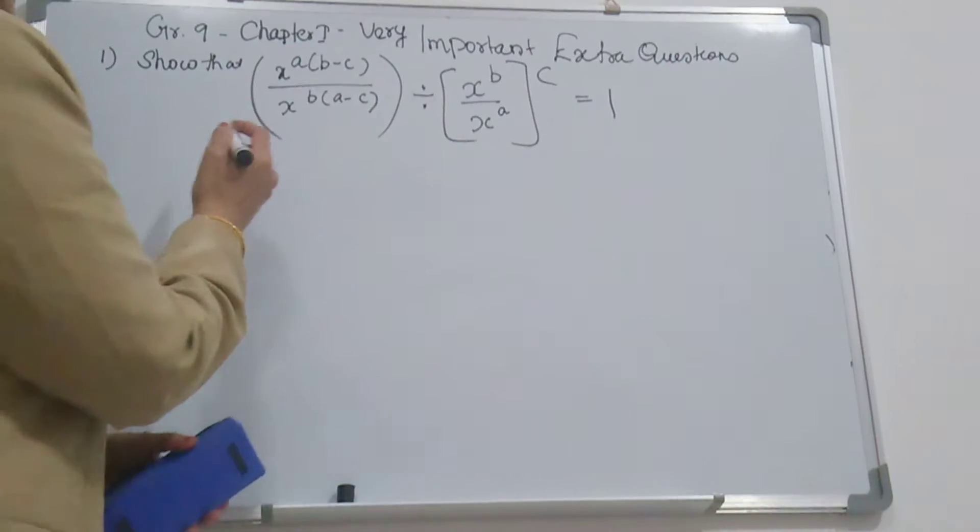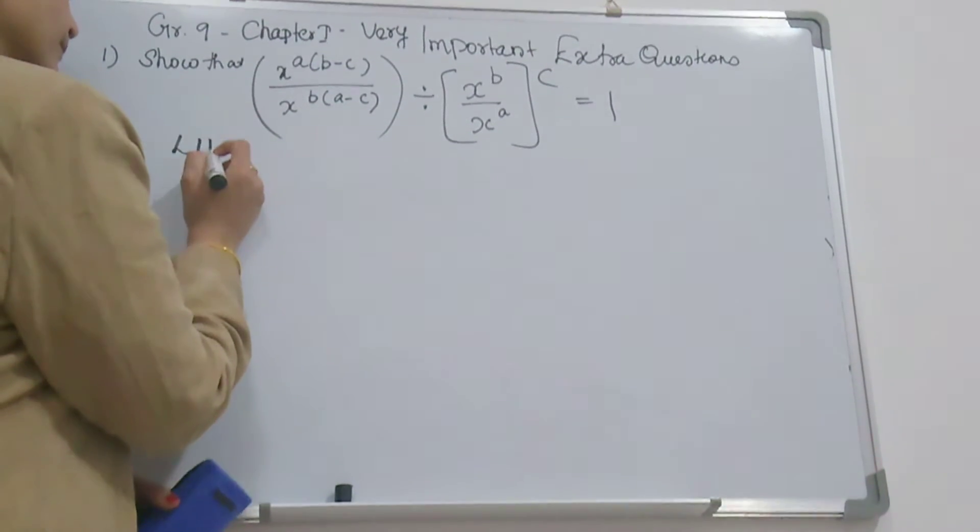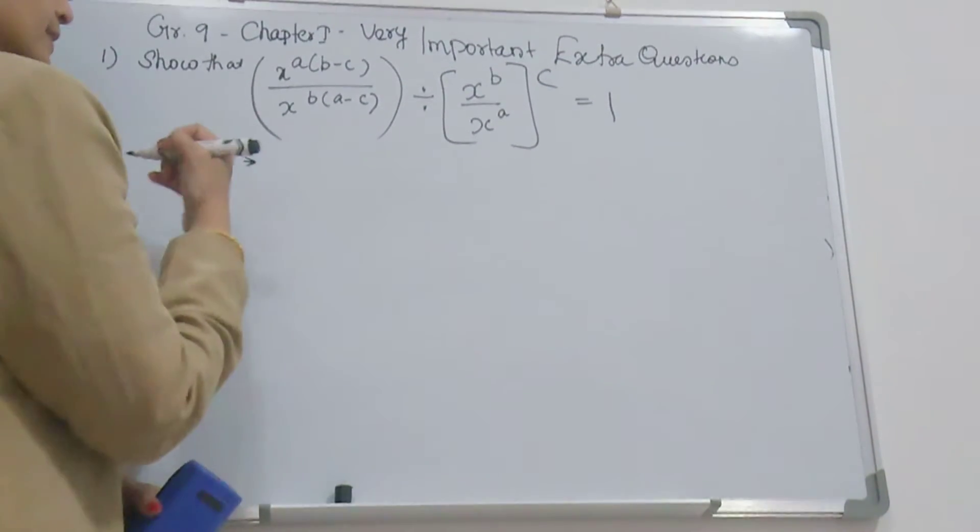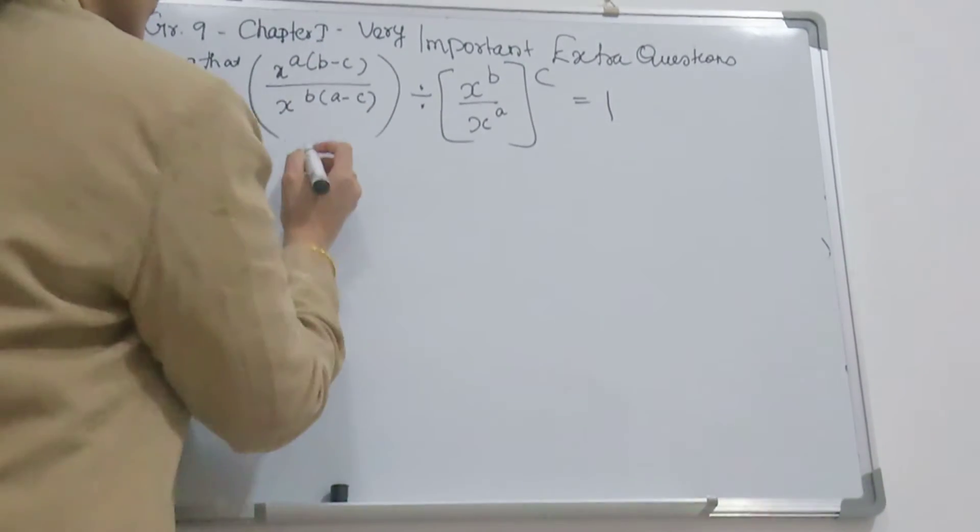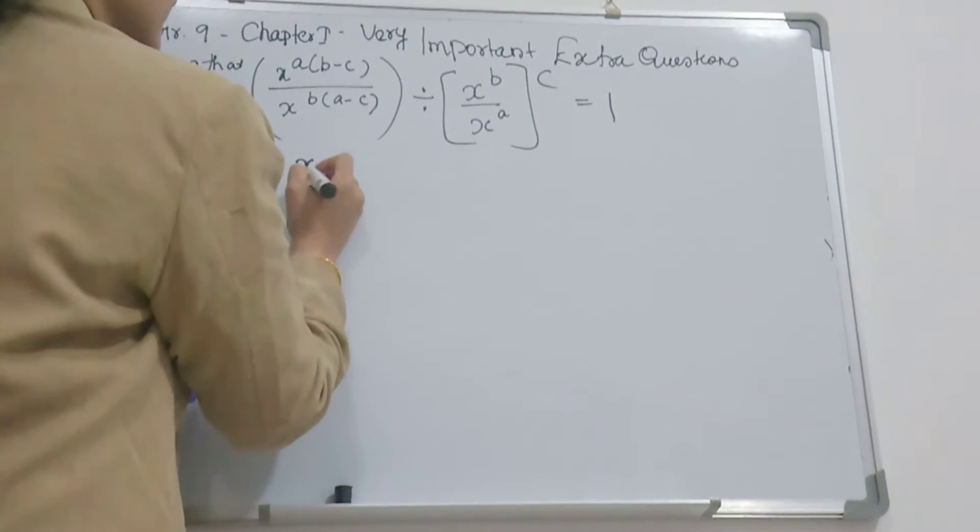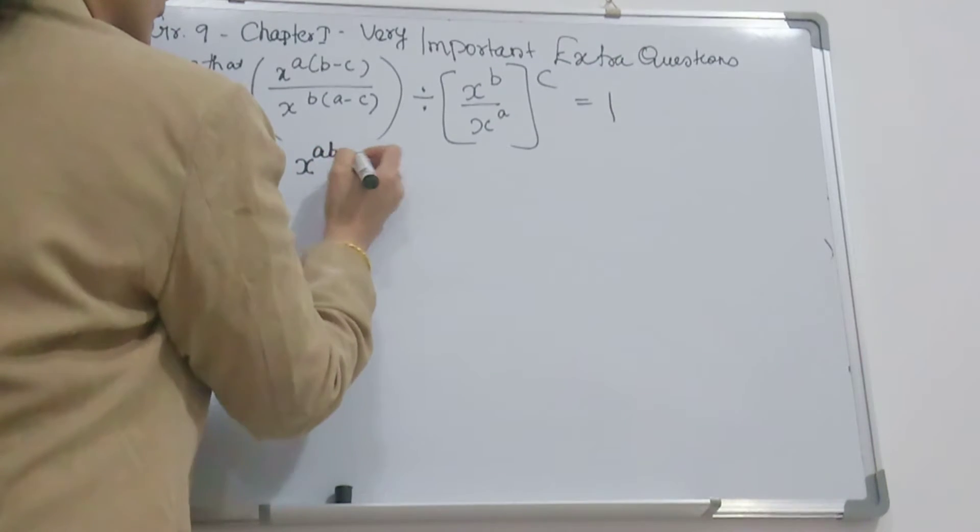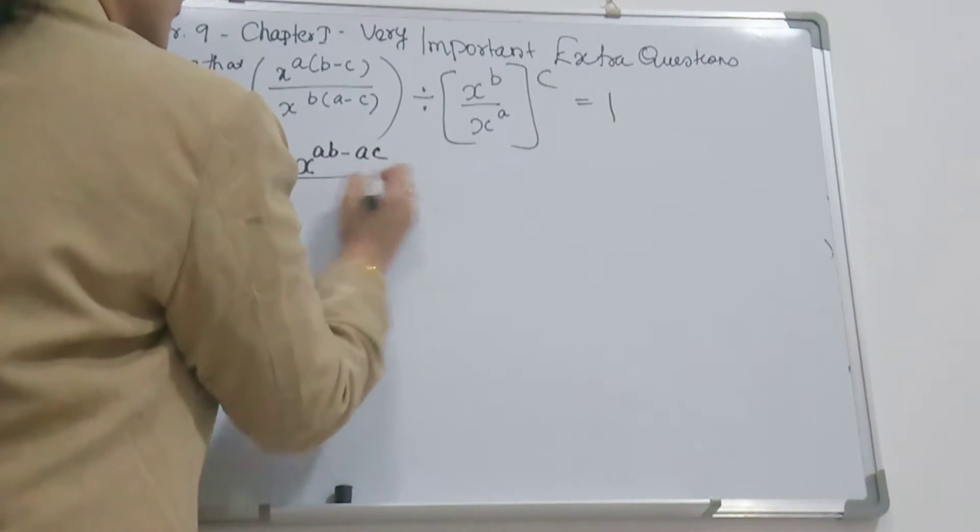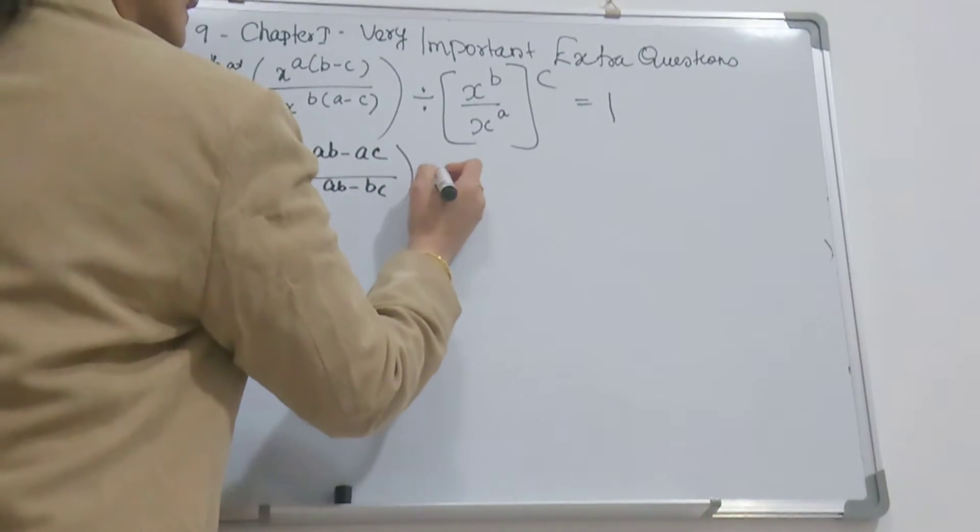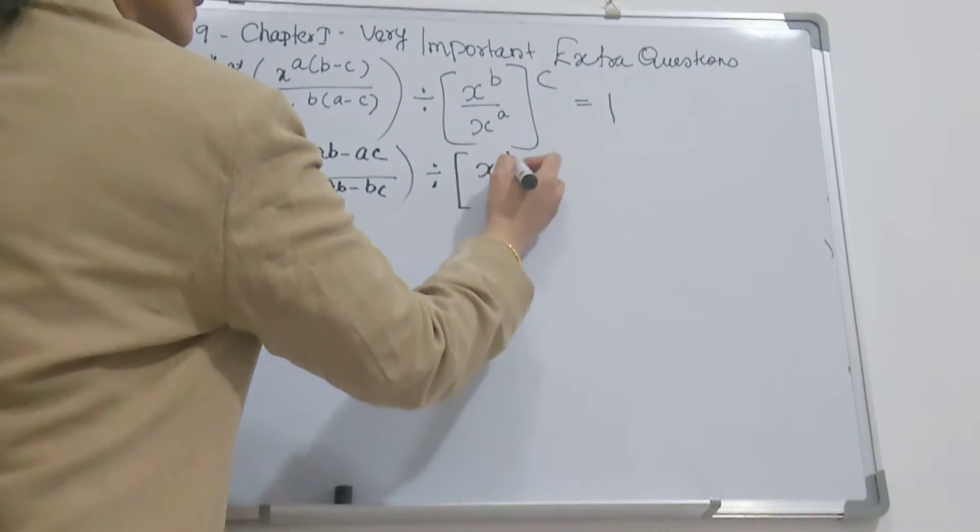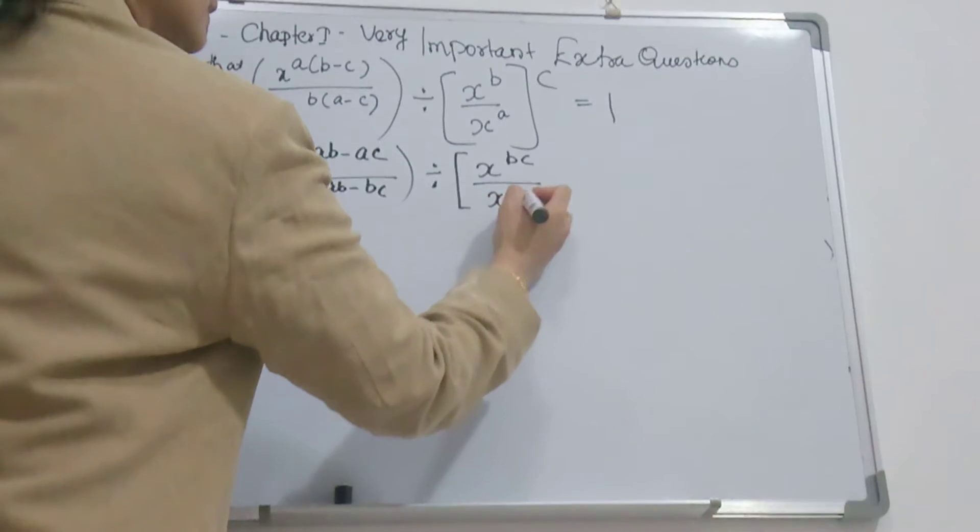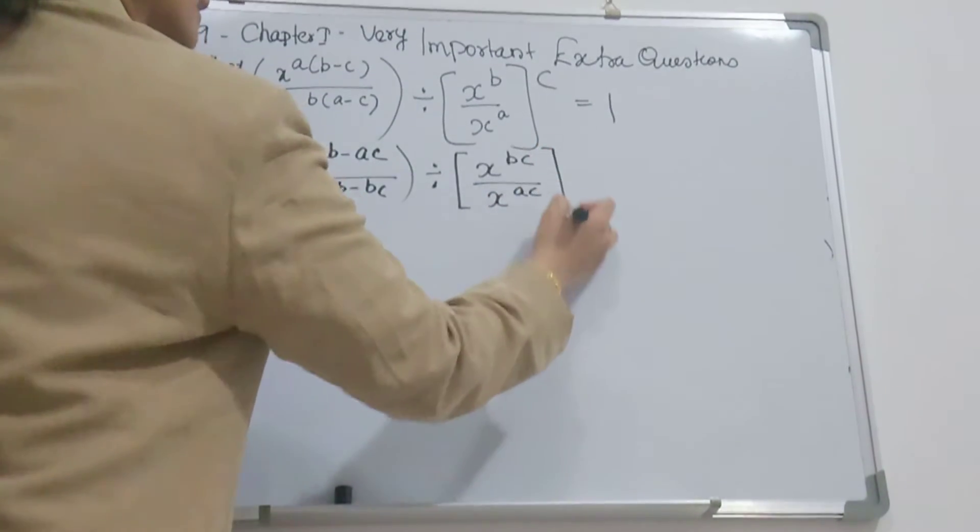So you take LHS, left-hand side. Let us expand and try to simplify. So this bracket becomes x^(ab-ac) divided by x^(ab-bc), and here x^(bc) divided by x^(ac).